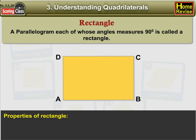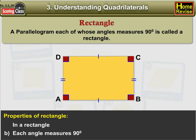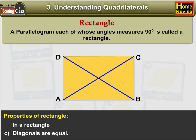Properties of rectangle. In a rectangle: A. Opposite sides are equal. B. Each angle measures 90 degrees. C. Diagonals are equal. D. Diagonals bisect each other.